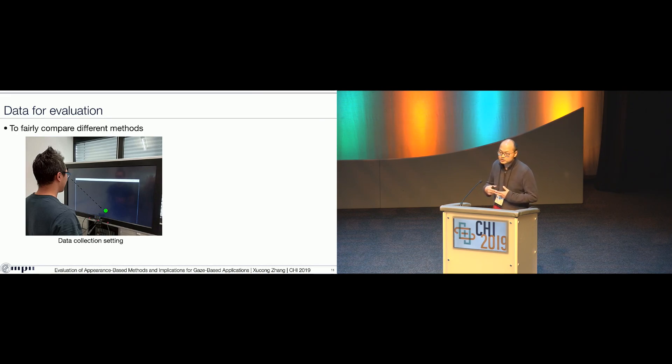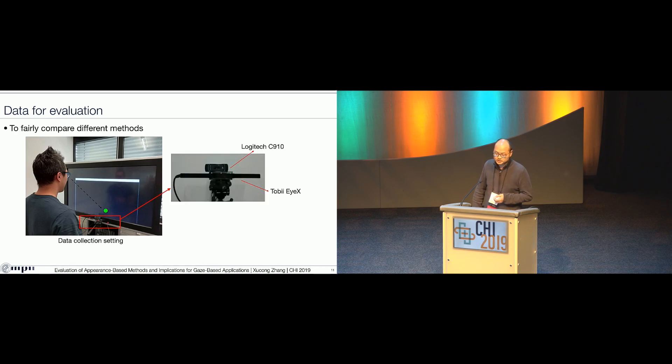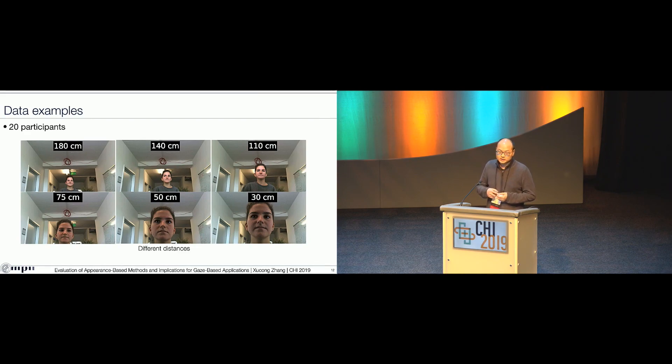We show a visual target on the screen and then let the participant look at the visual target. At the same time, we record their face image with the Azure Kinect webcam. And also, we recorded the gaze using a commercial eye tracker which is Tobii RX. In total, we recorded 20 participants at different distances from 180 centimeters to 30 centimeters. For each distance, we recorded 80 samples.